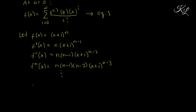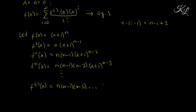At a specific i-th derivative, f^(i)(x) equals n times (n minus 1) times (n minus 2), continuing until (n minus i plus 1), times (x + 1)^(n minus i). You can observe the pattern: when the derivative order is 3, the last factor is (n minus 2), and in general for order i, the last factor is (n minus i plus 1).